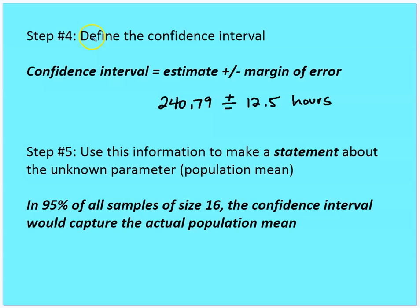Restating this: the confidence interval is the estimate plus or minus the margin of error, which includes the standard deviation times the z-value for that confidence level. We use this to make a statement about the unknown parameter — the population mean. The statement reads: in 95% of all samples of 16, the confidence interval would capture the actual population mean.